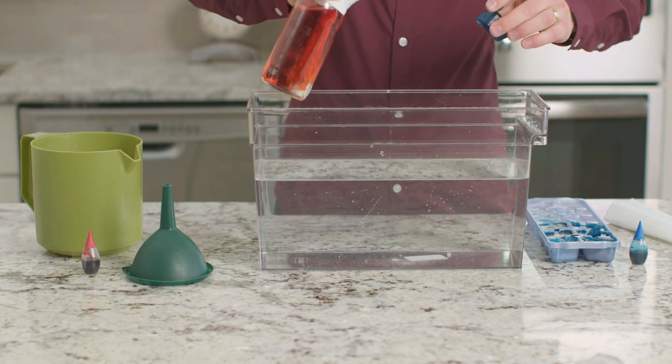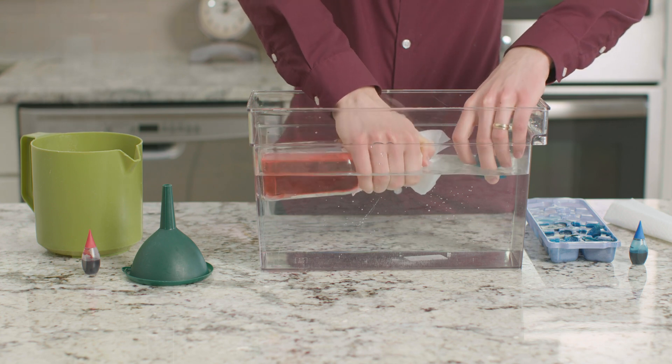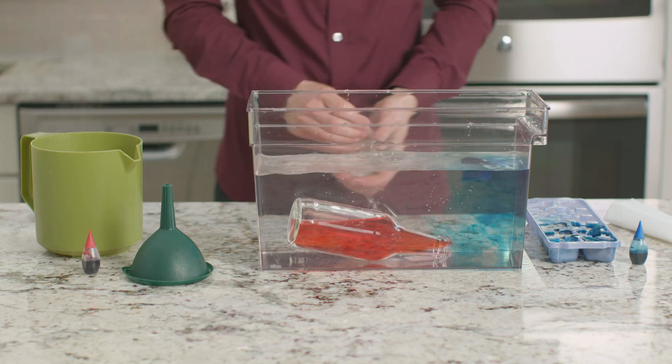Now I'm going to lower the bottle and the ice cube into the water at the same time, on opposite sides of the container. Once the bottle is submerged I will take the napkin off of the opening.